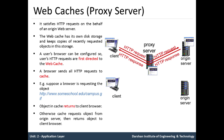After receiving this request, the origin server sends that object within an HTTP response to the proxy server. When the Web Cache receives the object from the server, it stores a local copy on its hard drive and then further sends an HTTP response message with that object to the client browser.